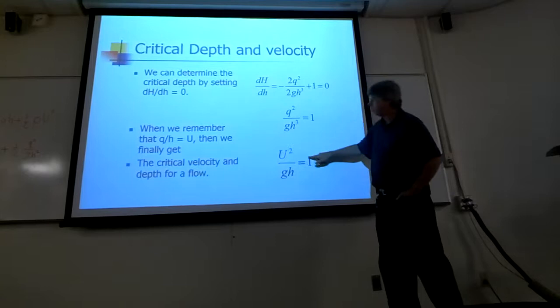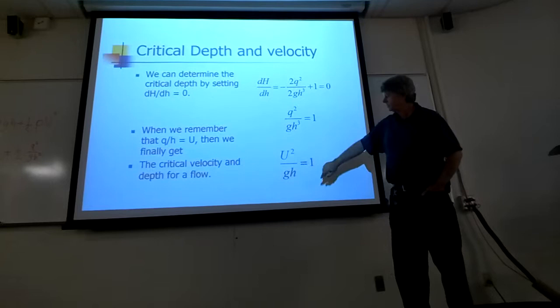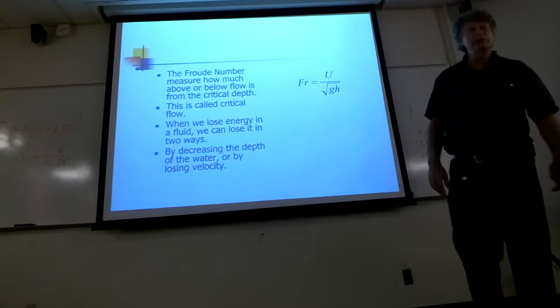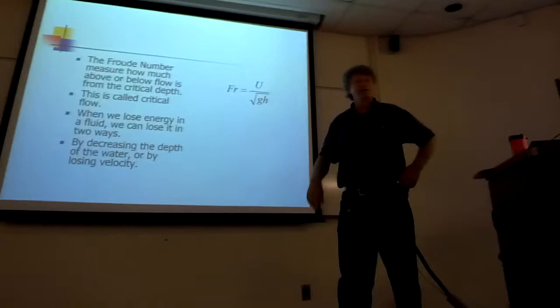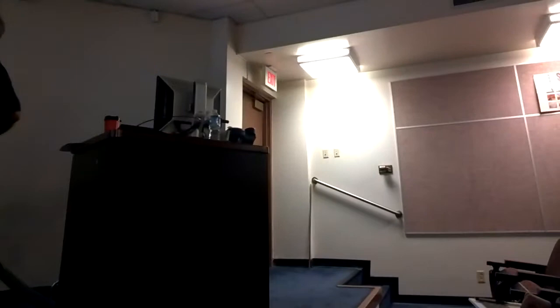And this here is called the Froude equation, F-R-O-U-D-E, from a guy named Froude, not Freud. Because he has an E in his name, right? Wait, how do you spell Freud's name? F-R-E-U-D. I thought it was different. Yeah, this is Froude. The Froude number, you basically take the square out of it, and so you take the square root of everything. So, the Froude number is the velocity divided by the square root of depth.